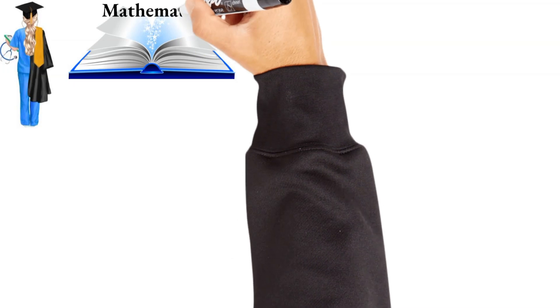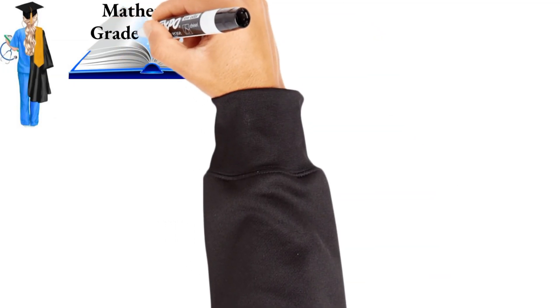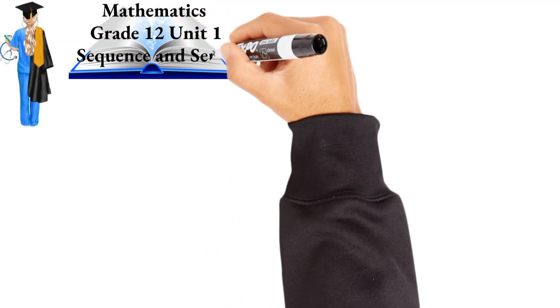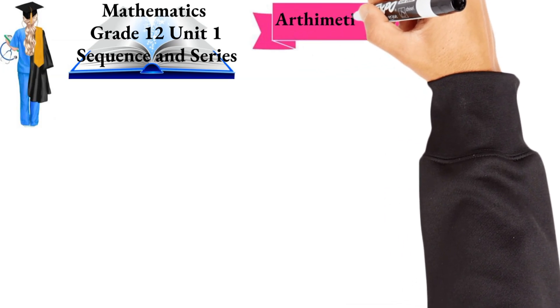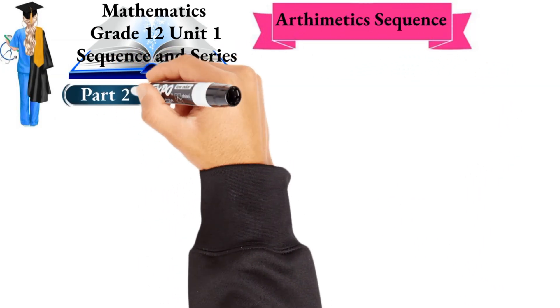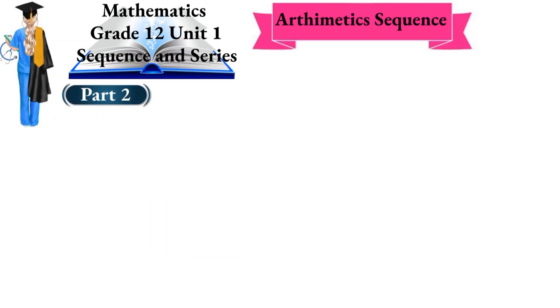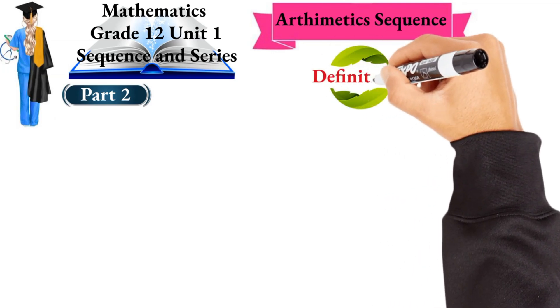My name is Hemi Ballad. I am in Mathematics, Grade 12, Unit 1: Sequence and Series. We will look at the arithmetic sequence in more detail again, now with Definition 1.2.